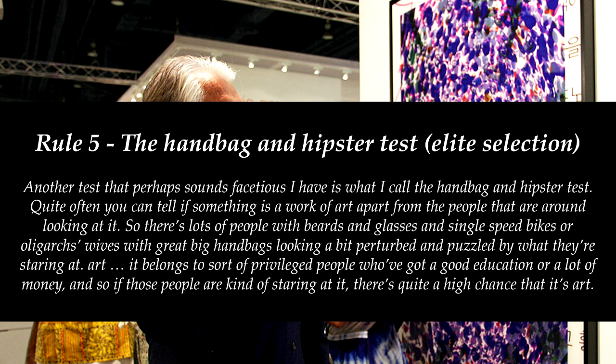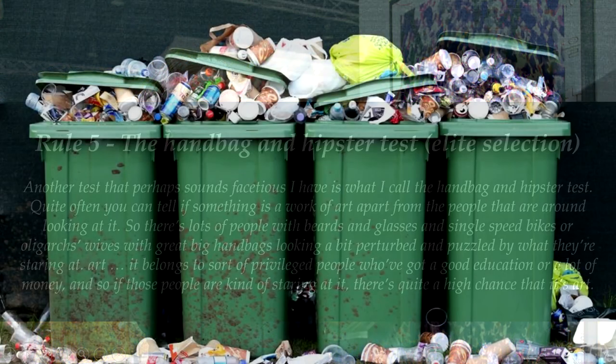'Art belongs to a sort of privileged people who've got a good education or a lot of money, so if those people are kind of staring at it, there's quite a high chance that it is art.' This is a similar argument to the academic one, but instead of institutions, Grayson places his trust in the current elite class — a view which, as soon as that elite is usurped, is disturbed.